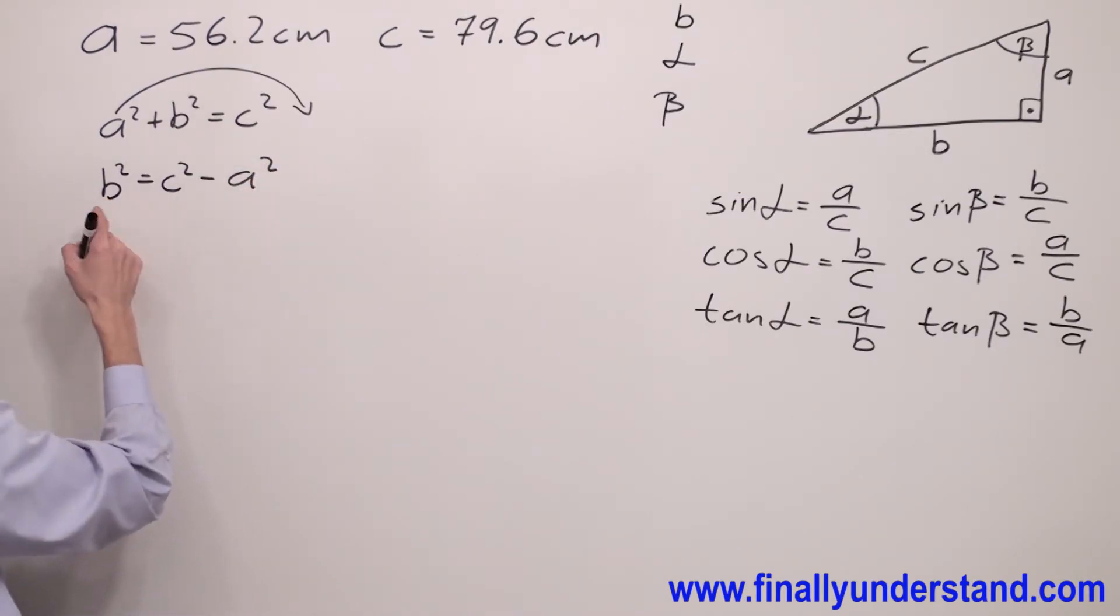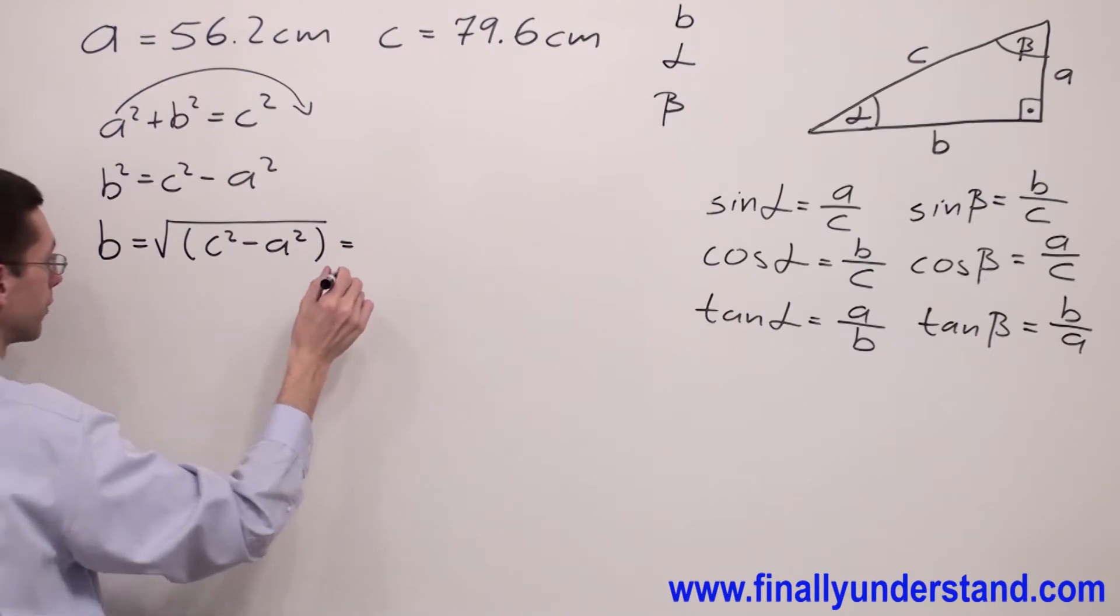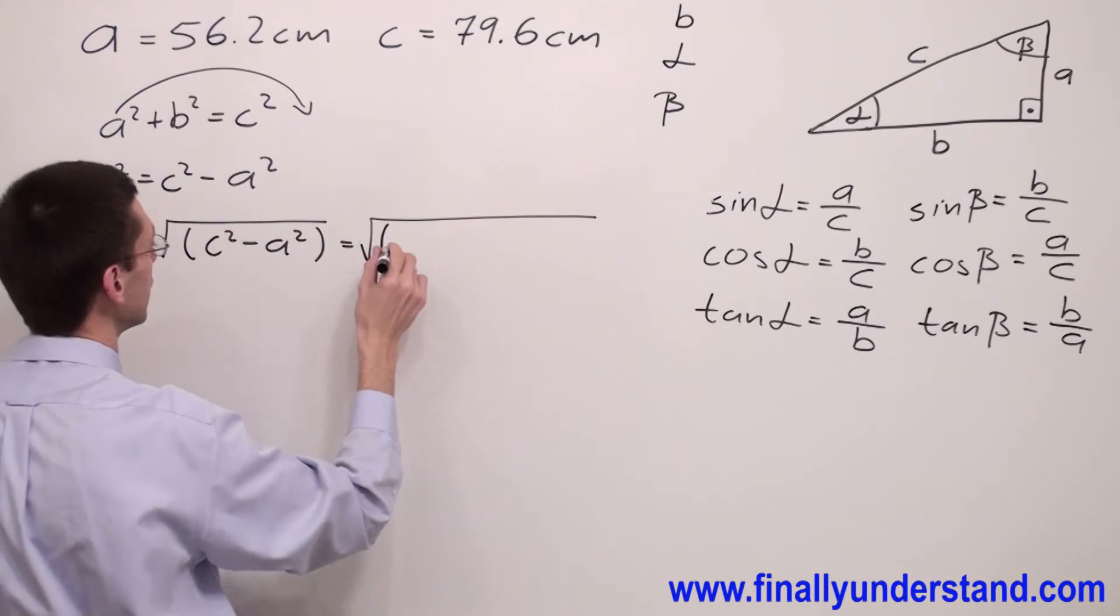So we're going to have b squared is equal to c squared minus a squared. In order to find b, you're supposed to square root both sides of the formula, and you will obtain b is equal to the square root, open parenthesis, c squared minus a squared.